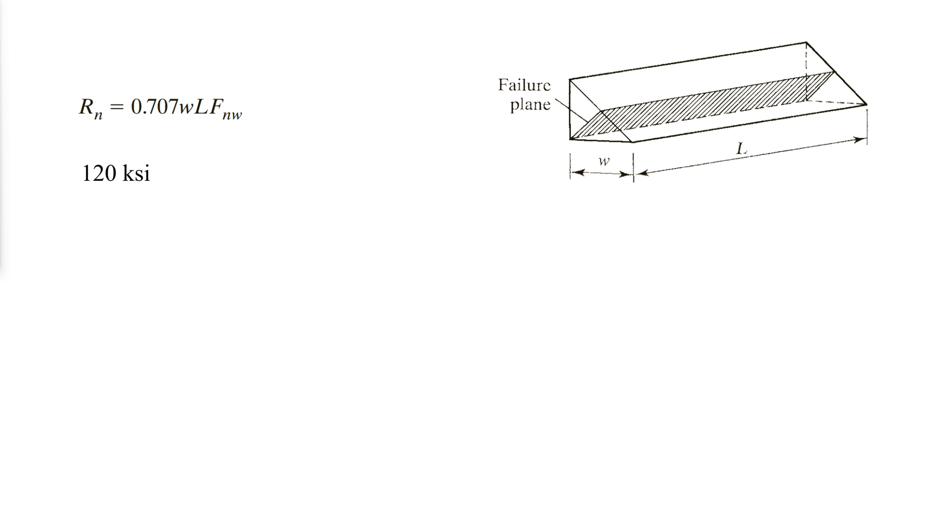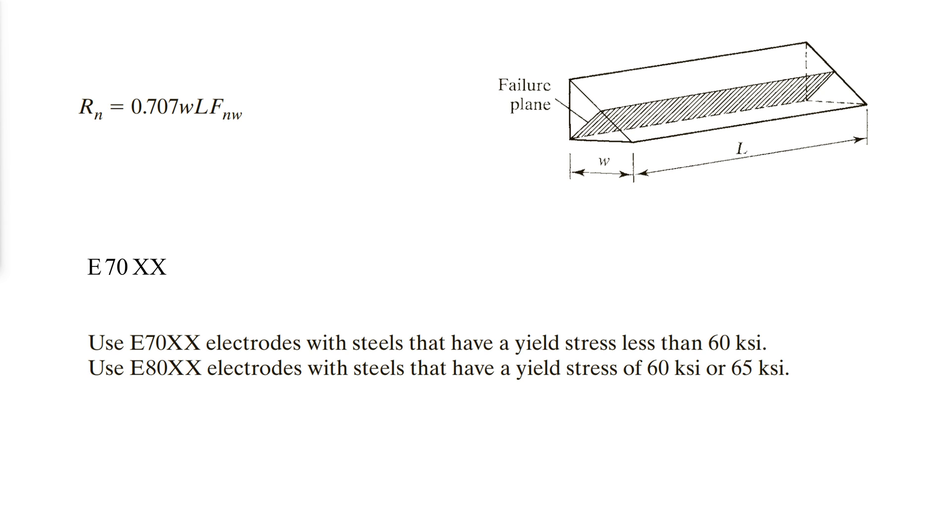The standard notation for specifying an electrode is the letter E followed by two or three digits indicating the tensile strength in kips per square inch and two digits specifying the type of coating. As strength is the property of primary concern to the design engineer, the last two digits are usually represented by XX. Electrodes should be selected to match the base metal. For the commonly used grades of steel, only these two electrodes need to be considered.